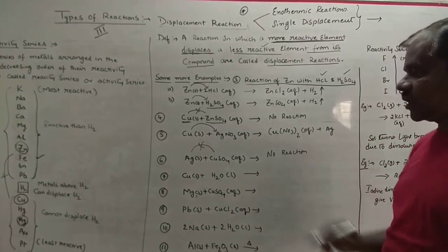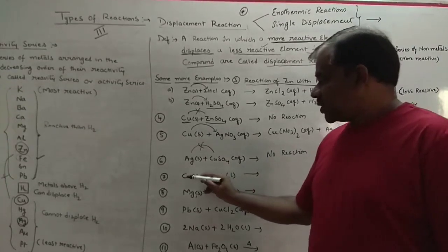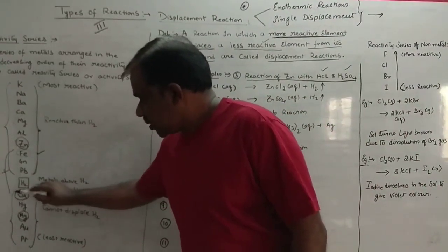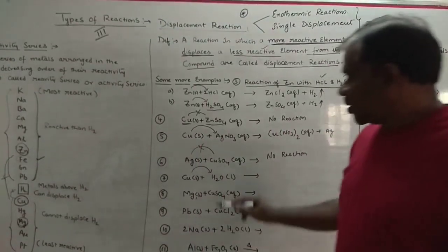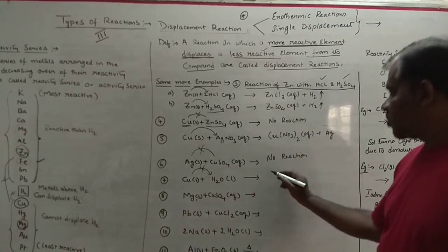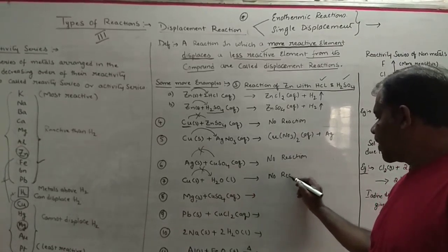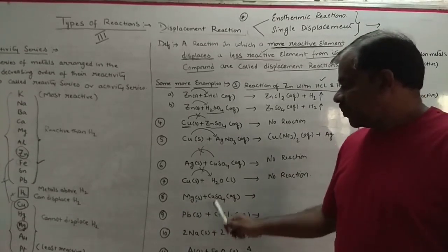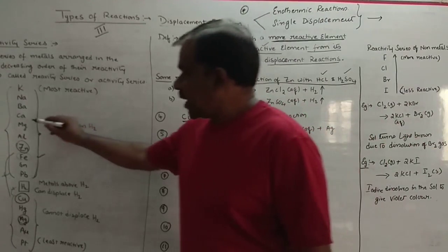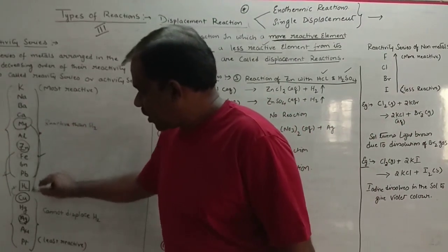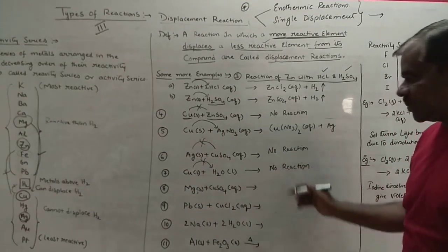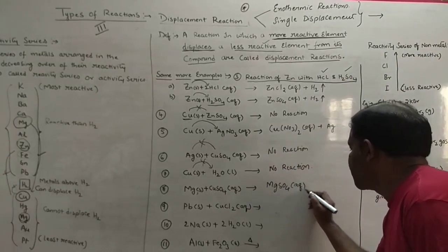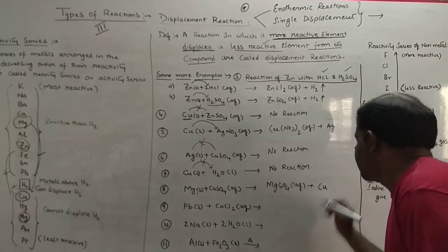There is no reaction when silver is placed in copper sulfate. What happens when copper is placed in water? We know that hydrogen is above copper in the reactivity series, so copper cannot displace hydrogen. There will not be any reaction here as well. Coming to magnesium placed in copper sulfate — magnesium is more reactive than copper, so a displacement reaction occurs, forming an aqueous solution of MgSO₄ plus Cu.